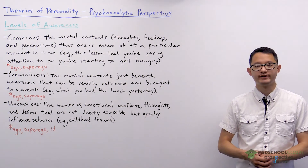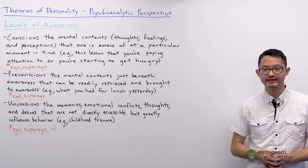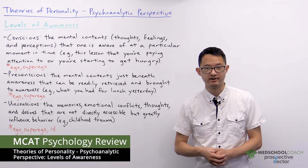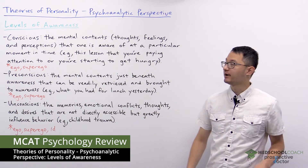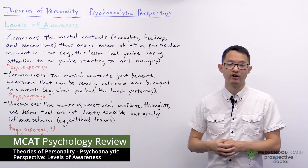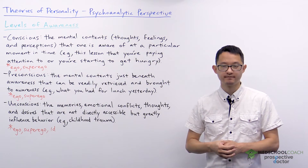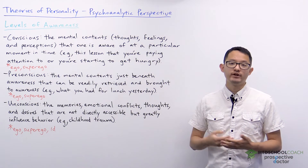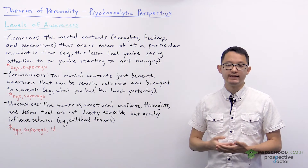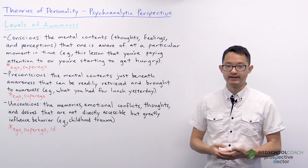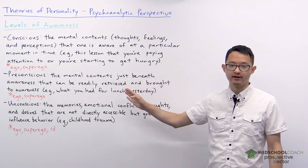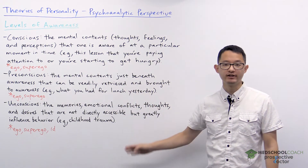In this video, we're going to continue our discussion on the psychoanalytic theory of personality by going over the levels of awareness. Freud believed that we had three levels of awareness: the conscious, preconscious, and unconscious.